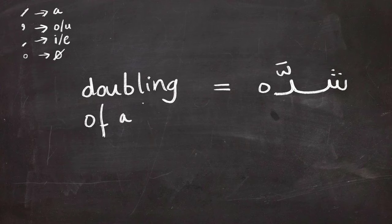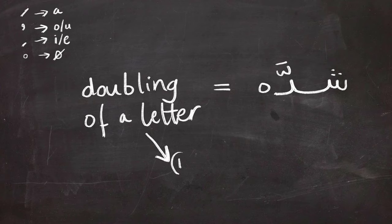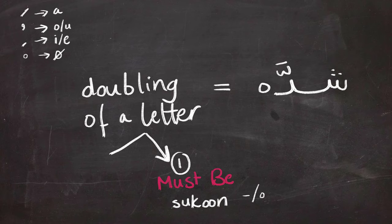So what else should we know about shedda? Shedda - the word shedda contains shedda, which is quite interesting. The first letter of the two must have sukoon, so it must contain or have this symbol on top of it - the perfect circle, the sukoon - or completely nothing, because it also means the sukoon.